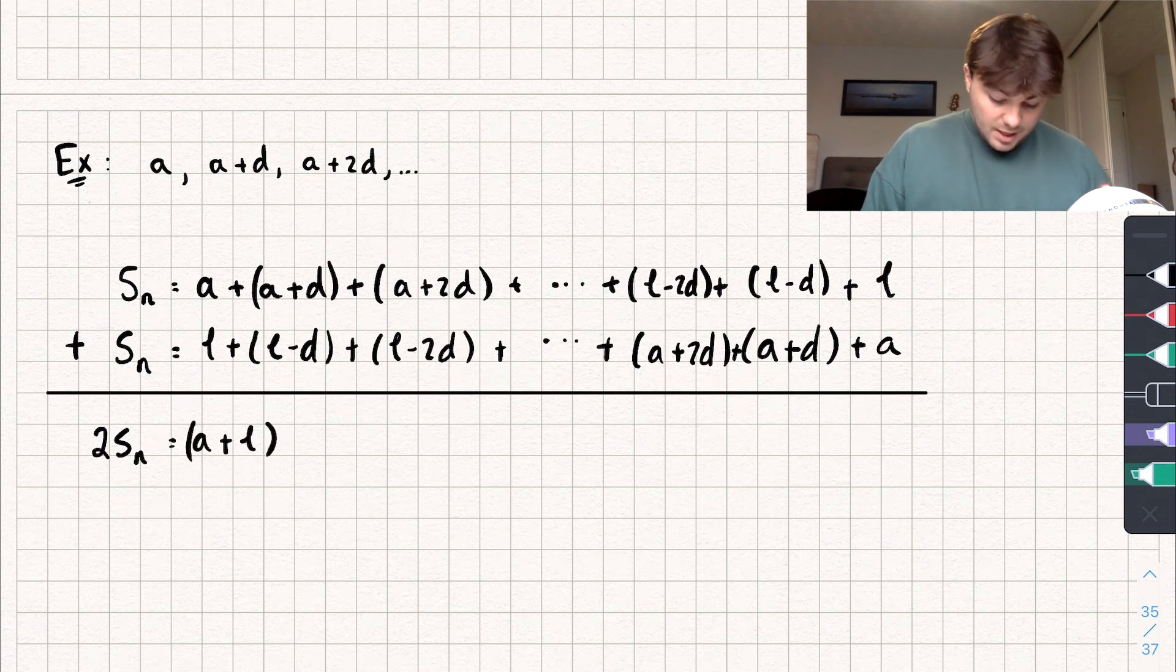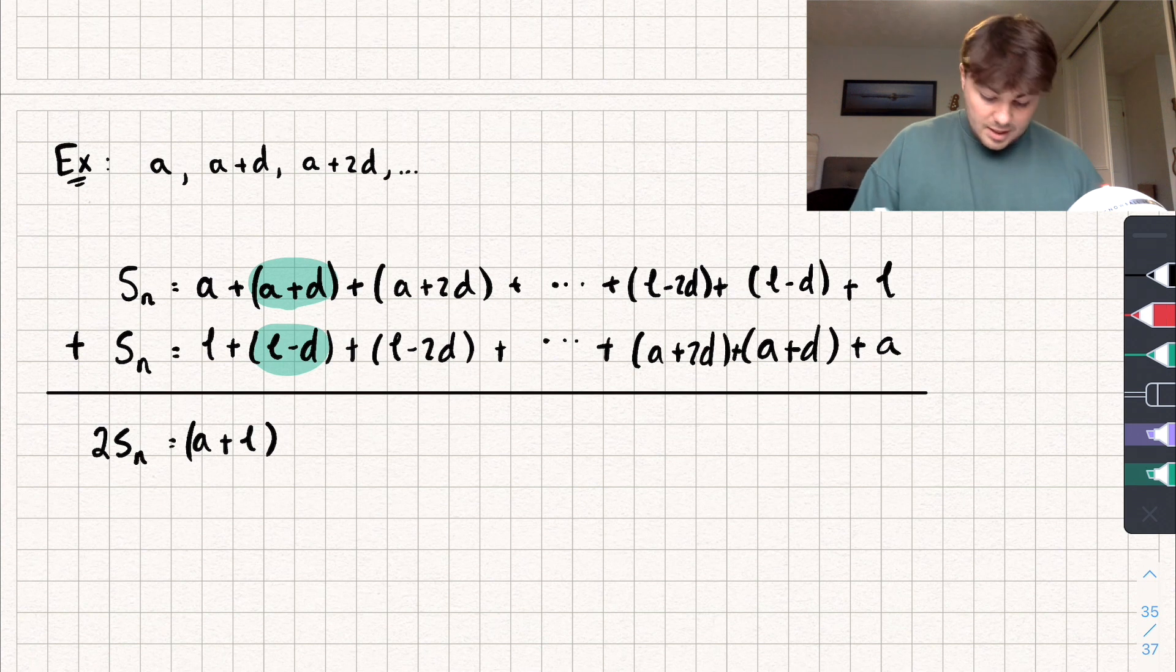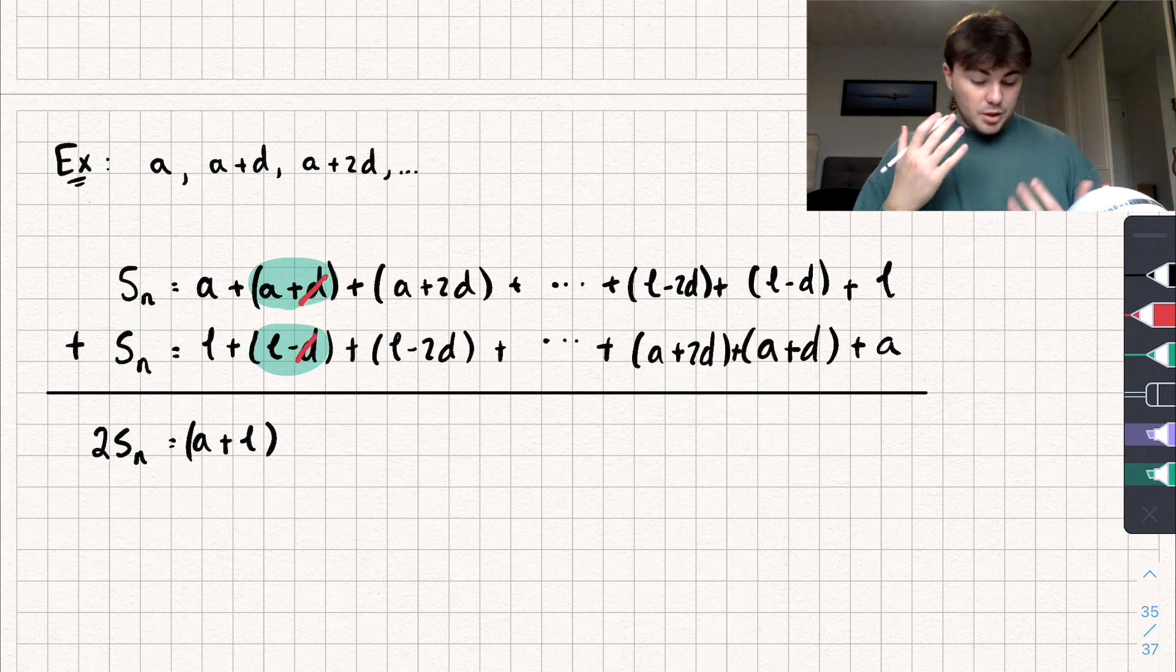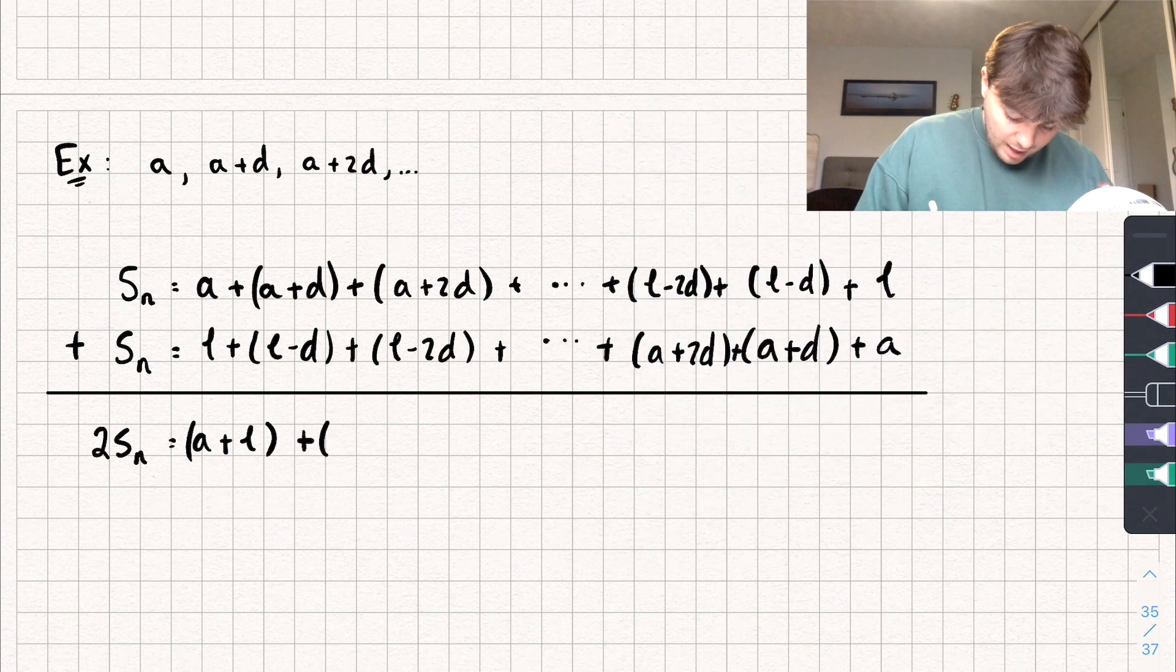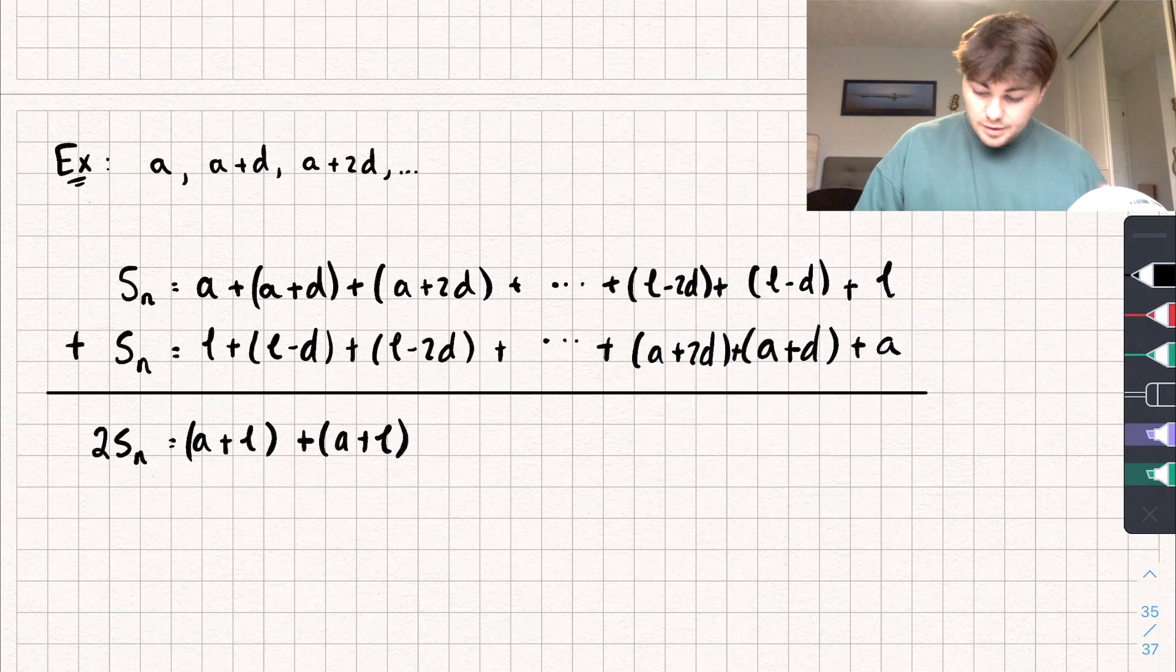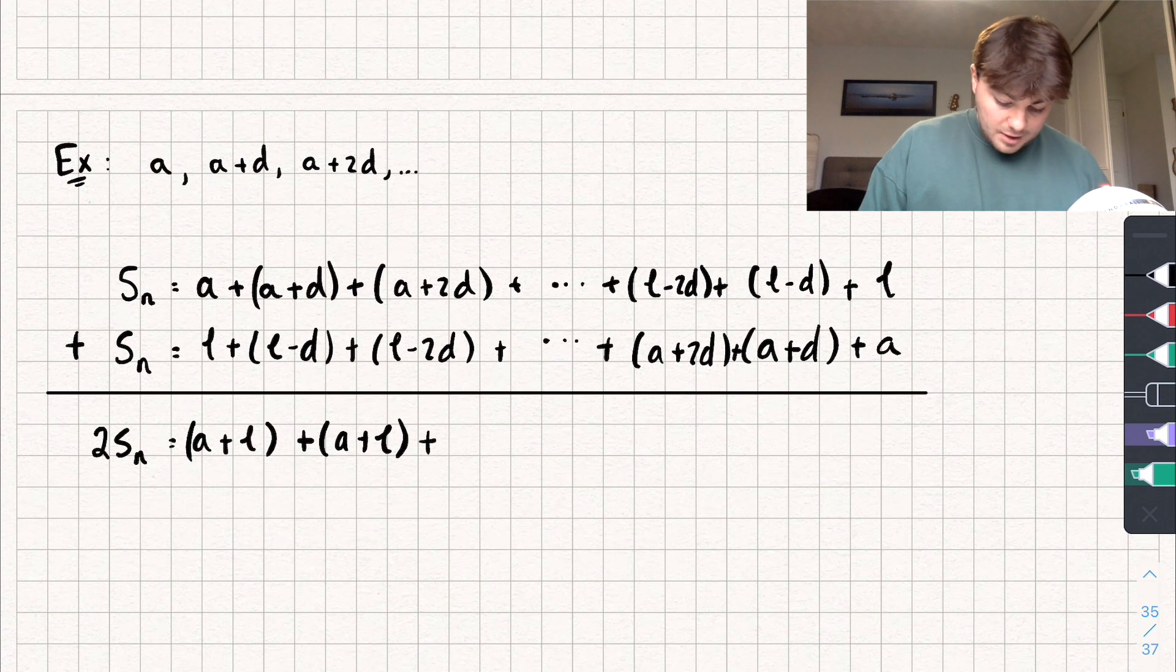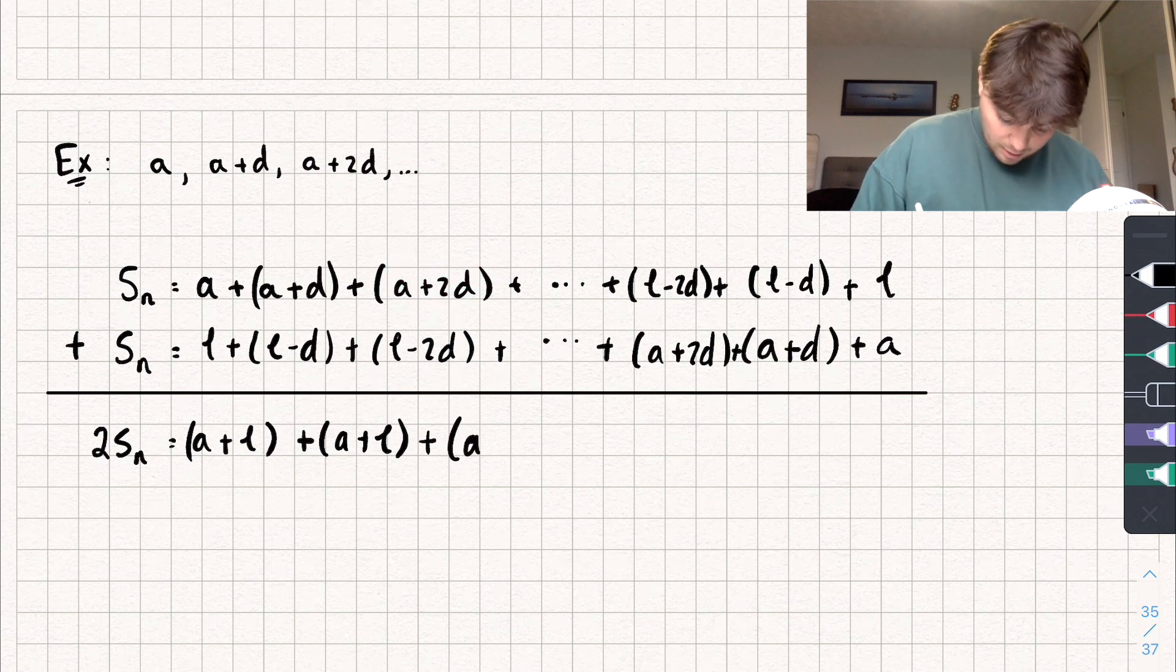Now, if we look at these two terms here, you'll see that these Ds are going to cancel out with each other, and we're left with A plus L again. So let's write plus A plus L. Let's now look at the third term, and again, you'll see that these Ds cancel out, and we're left with A plus L.